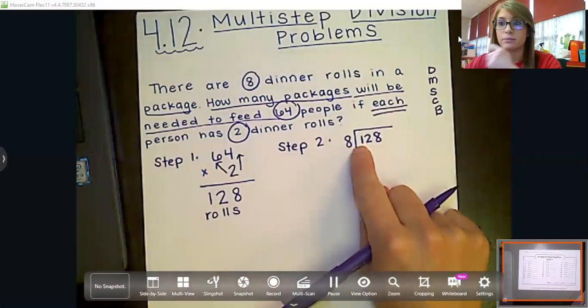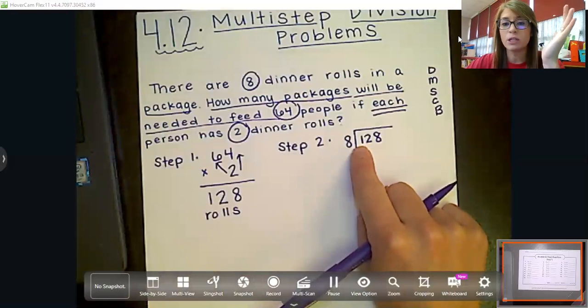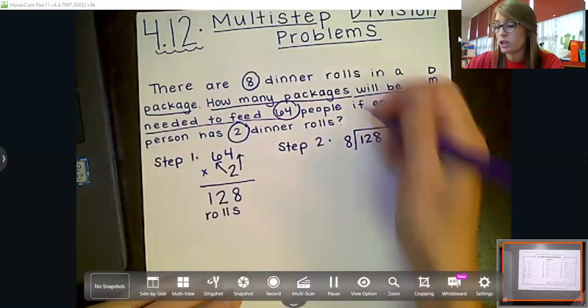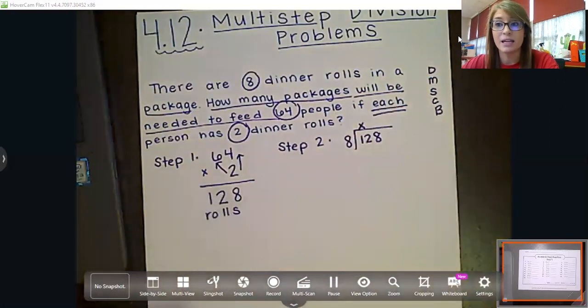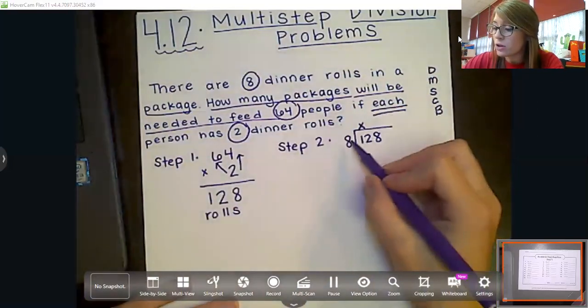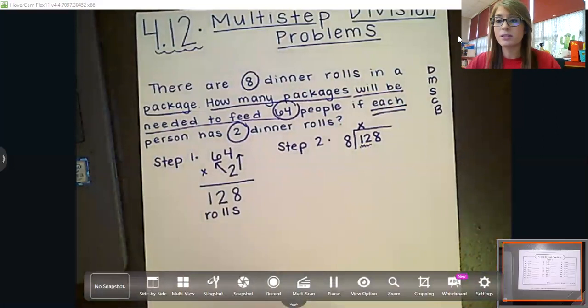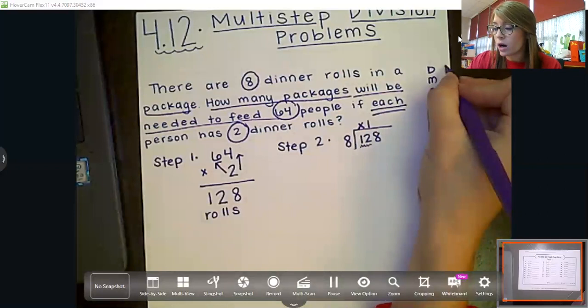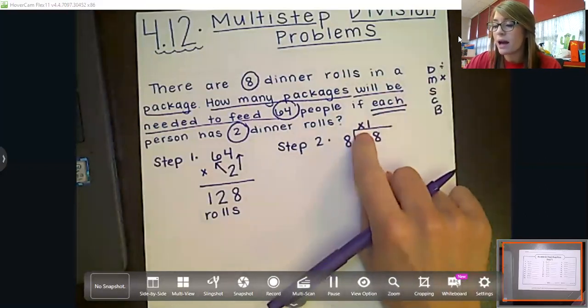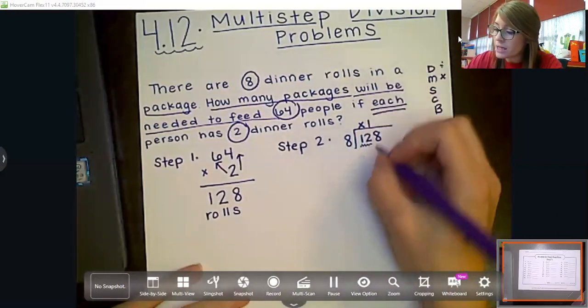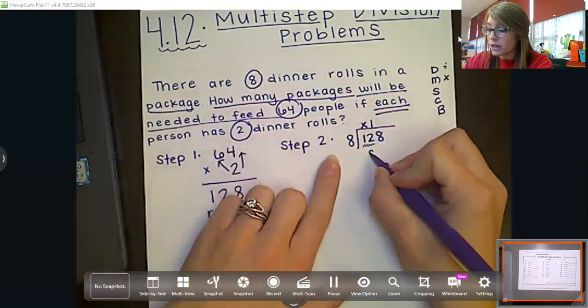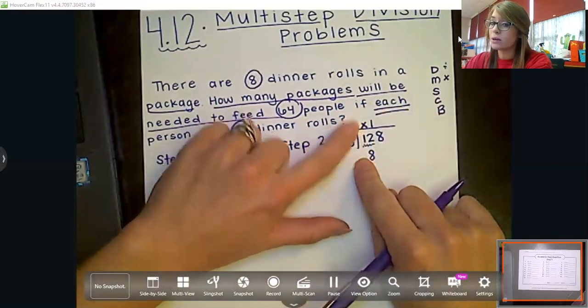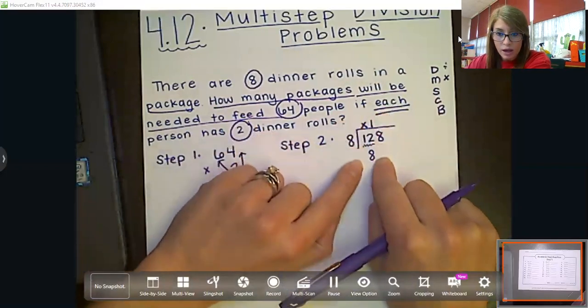Can eight go into one? Oh, no, it can't. Who remembers what we do if it cannot go into this first number? Very good. We just put that X as a placeholder up there to make sure that we keep our numbers lined up correctly. So now I have to look at, can eight go into 12? Boys and girls, can eight go into 12? Sure can. How many times without going over? Very good. One time. So I'm going to place that one right there above that two. Second step. We are multiplying. Eight times one gives me what? Very good. Eight. And I'm going to make sure I keep it in line and I put it right underneath this two. I can't put it underneath this one because we're done with that row. It didn't work. We have to line it up how we are.